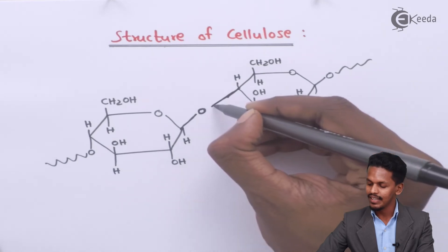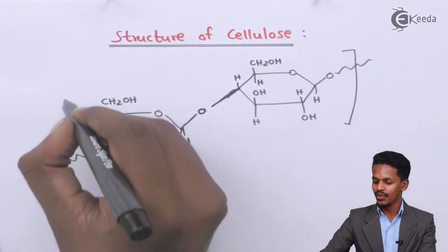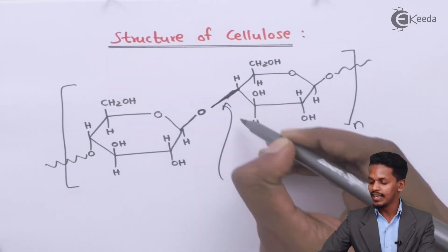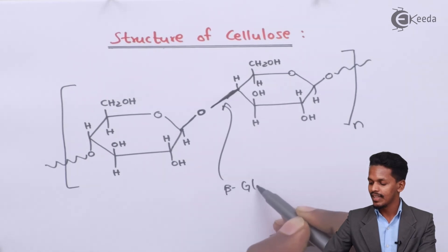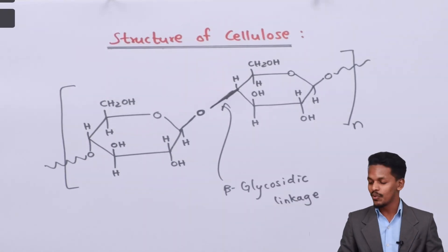So this is how we have talked about the structure of cellulose. And this is N-times. And this is basically beta-glycosidic linkage. So this was the structure of cellulose. And that's it.